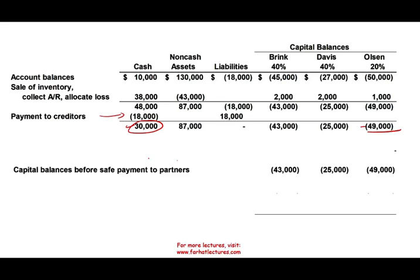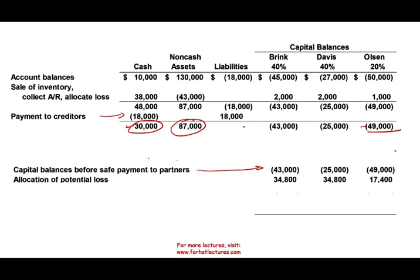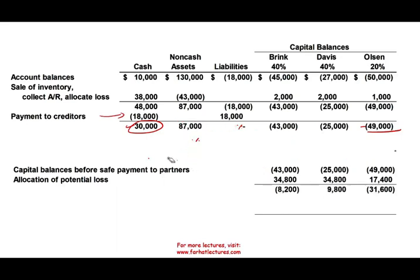Here are the capital balances before we make this assumption. We still have $87,000 worth of non-cash assets. We assume this is worth zero — we assume we can't sell this and will get nothing for it. Therefore we have $87,000 of losses to allocate: $87,000 times 40% equals $34,800 to Brink; the same amount to Davis because they also have a 40% rate; and $87,000 times 20% equals $17,400 to Olson. After allocating the losses and computing the new capital balances, notice what happened — Davis is wiped out and now has a deficit balance. In a worst case scenario, Davis will not exist.